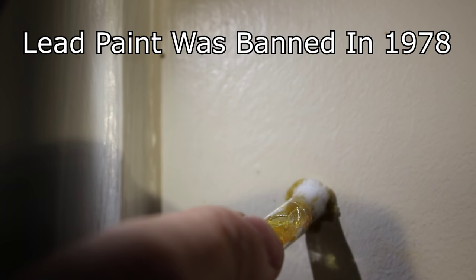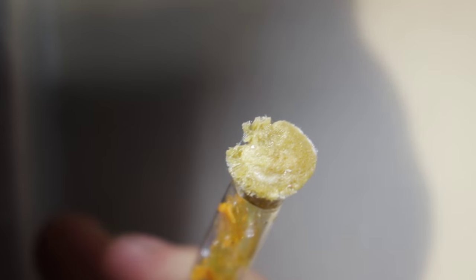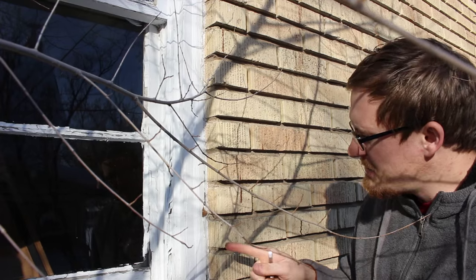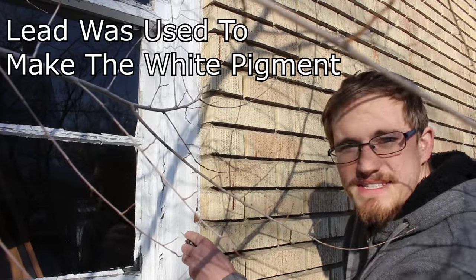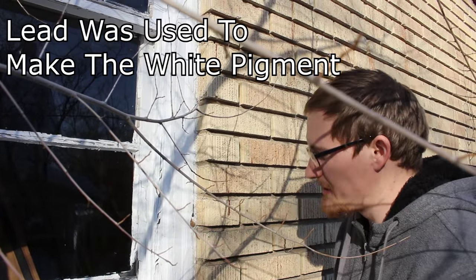Anyway, I've been checking around for lead paint. It looks like on the interior of the house there's no lead paint, but on the exterior here I'm pretty sure this is lead paint because this is a very pasty white color which is very different from the other paint.